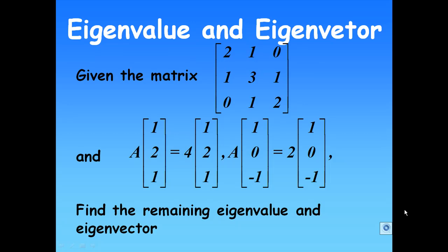Given the matrix [2 1 0; 1 3 1; 0 1 2], we are given that A times [1 2 1] equals 4 times [1 2 1], and A times [1 0 -1] equals 2 times [1 0 -1]. It means that [1 2 1] is an eigenvector with corresponding eigenvalue 4, and [1 0 -1] is an eigenvector with corresponding eigenvalue 2.